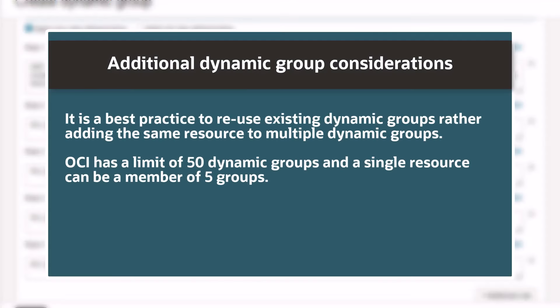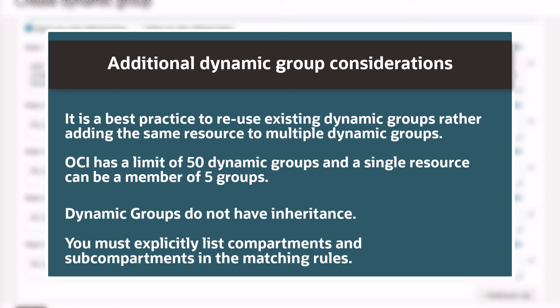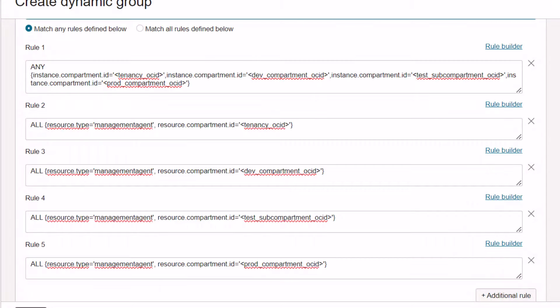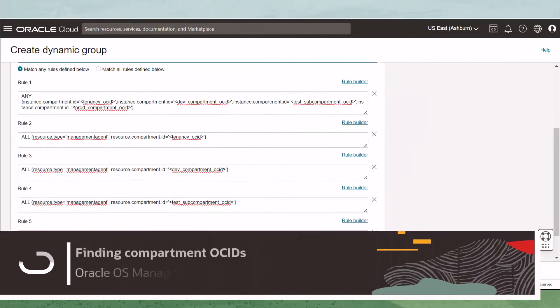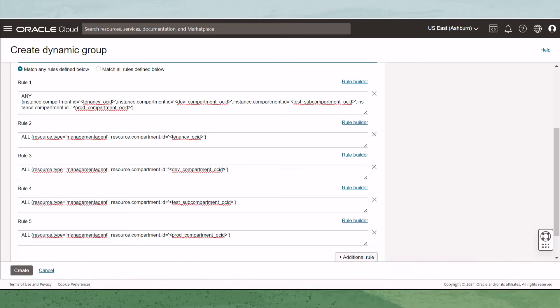It is a best practice to reuse existing dynamic groups rather than adding the same resource to multiple dynamic groups. OCI has a limit of 50 dynamic groups and a single resource can be a member of 5 groups. Dynamic groups do not have inheritance — you must explicitly list compartments and sub-compartments in the matching rules. Before creating these dynamic rule statements, we are required to know the OSID for our desired compartments.